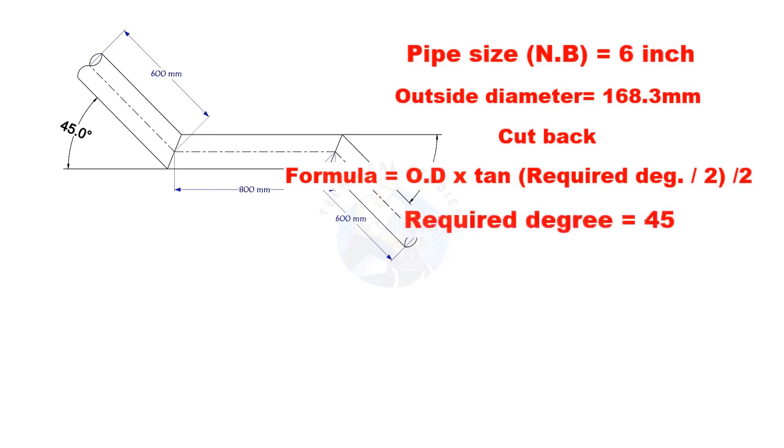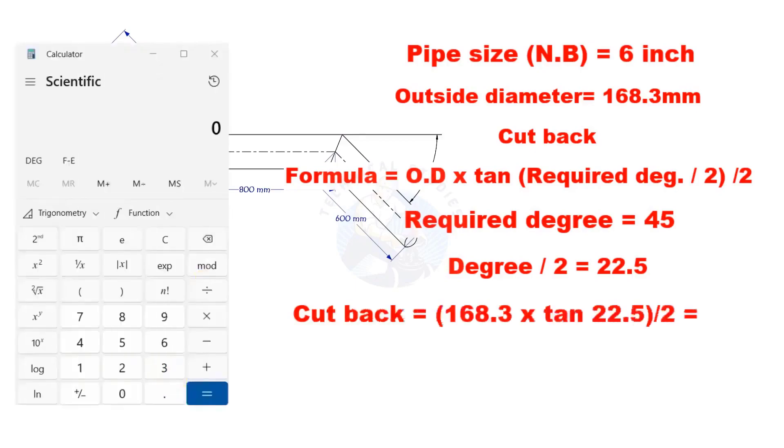Here, the required degree is 45. Half of 45 is 22.5. Let us calculate. The cutback is nearly 35 millimeters.